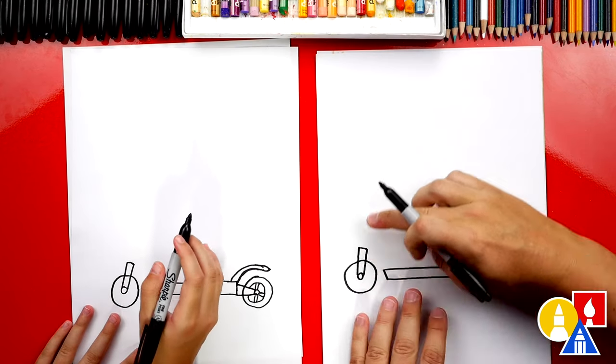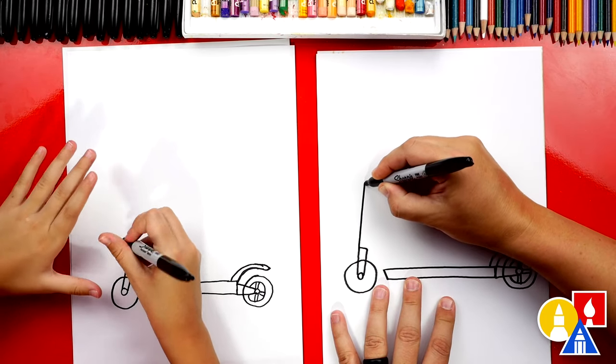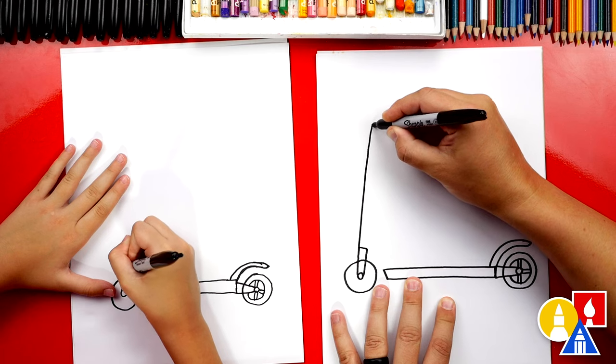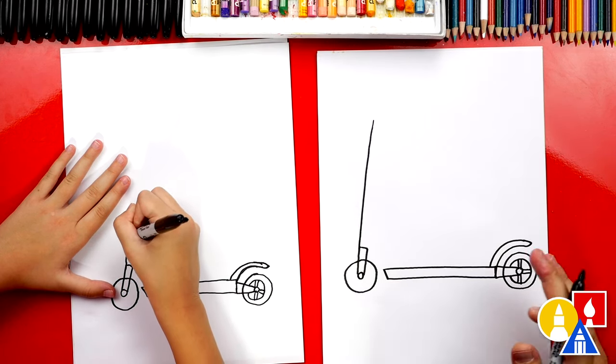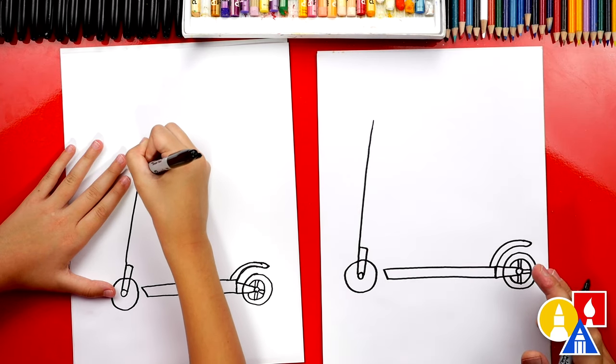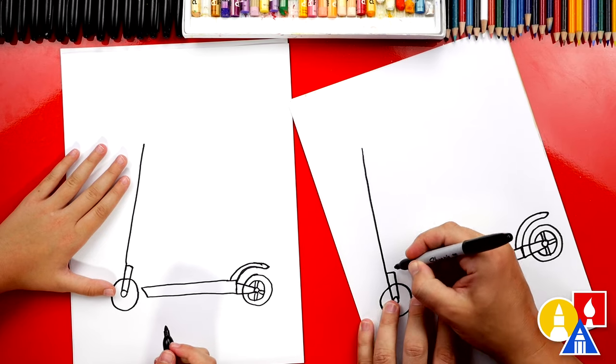Now we're gonna draw the steering column. We're gonna start here. We're gonna draw a big line that comes up. Now it's not going straight up a straight vertical. It's a little diagonal. It's tipped just a little bit.